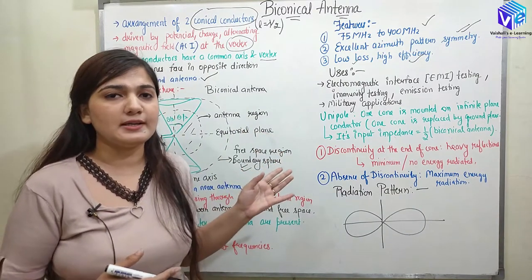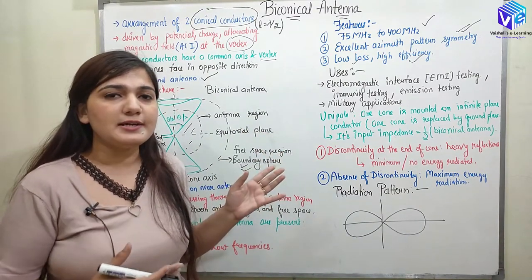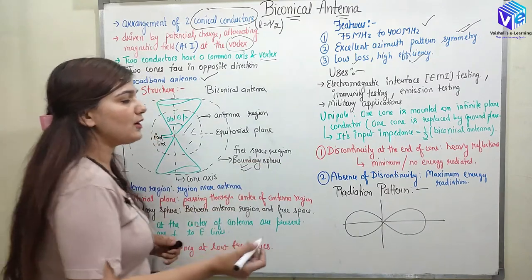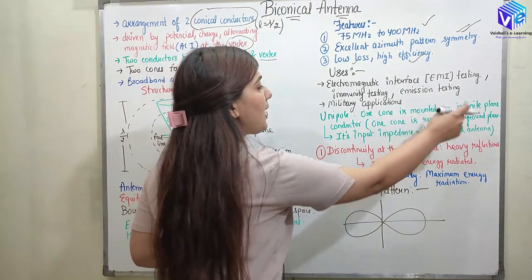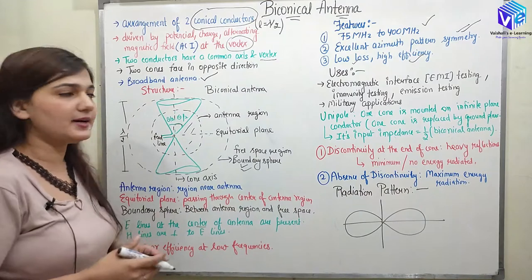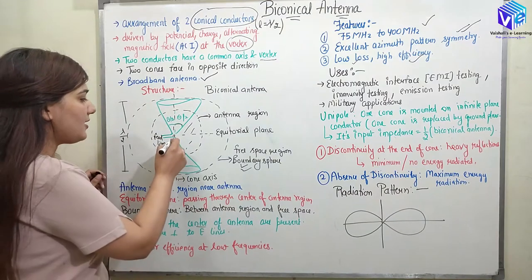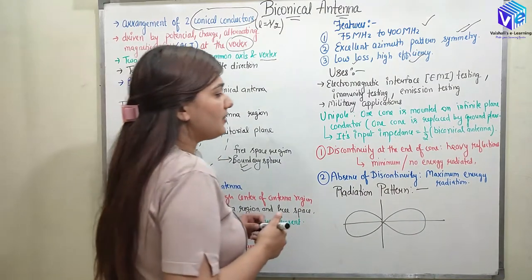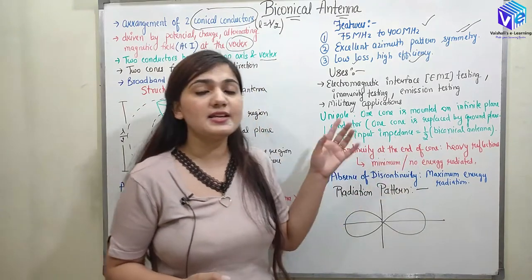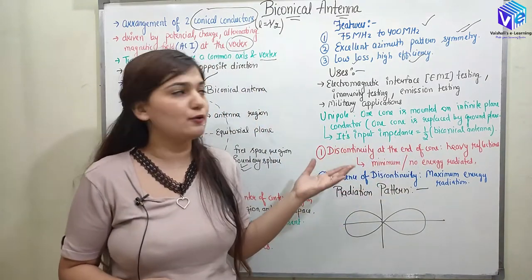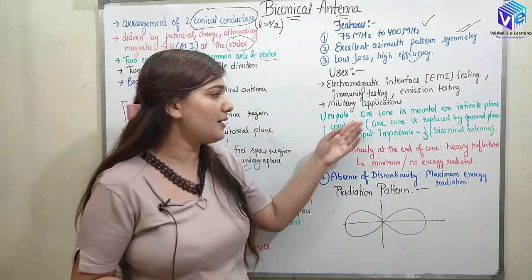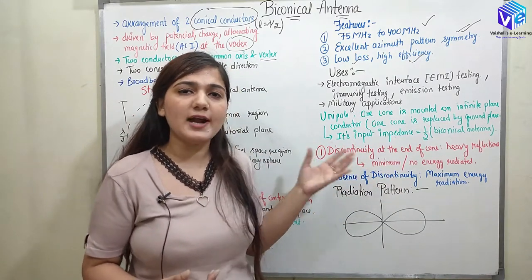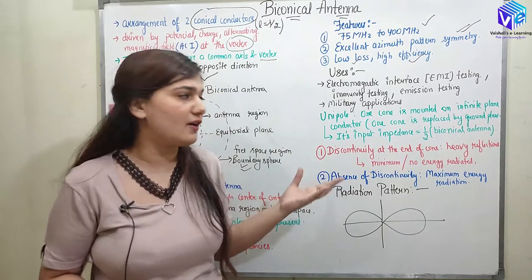Coming to the unipole antenna: in the biconical antenna we have two cones, but in the unipole antenna one cone is mounted on an infinite plane conductor. In place of one cone we have an infinite plane conductor. Its input impedance is half of the biconical antenna, since one cone is replaced by the ground plane so that the impedance also becomes half.